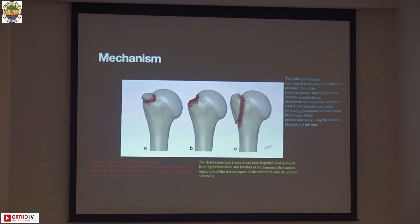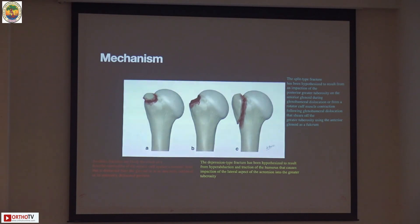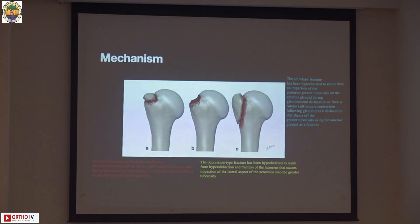The mechanisms of injury are based on the morphological classification. Type one is an avulsion-type injury — essentially like a rotator cuff tear but taking a bony fragment with it; the rotator cuff contracts, the shoulder dislocates, and the avulsion happens. Type two is more of an impact-type injury in which the hand is hyper-abducted and there is a direct impact of the greater tuberosity against the acromion.